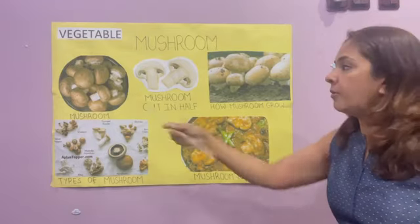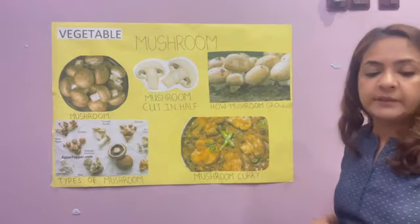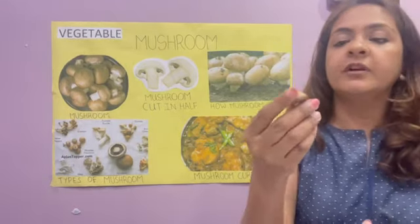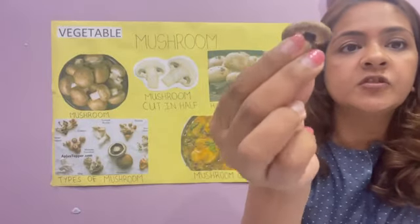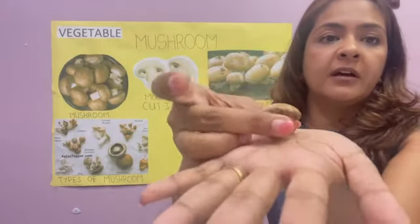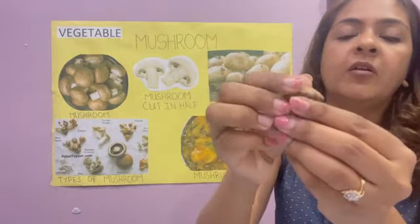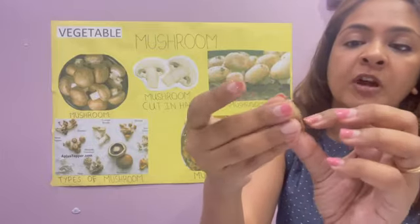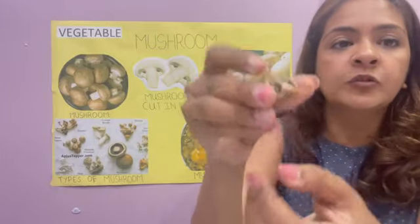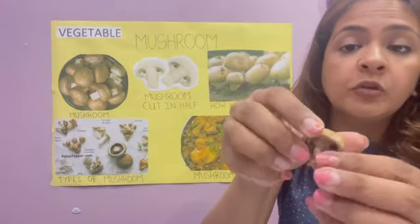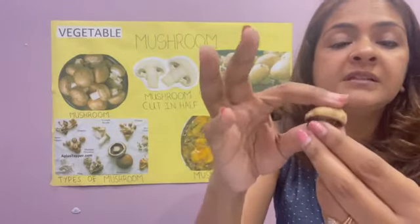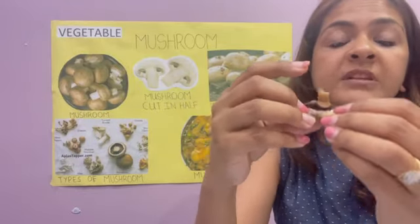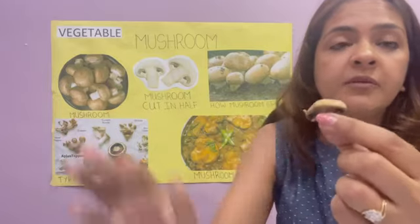The most common dish in India made from mushroom is the mushroom curry. Now let's get into the facts of mushroom. Here I have the actual mushroom — this is called a button mushroom. It looks like an umbrella, it feels really smooth and spongy. When you cut it in half, it is also really smooth inside — the inside and the outside feel the same.